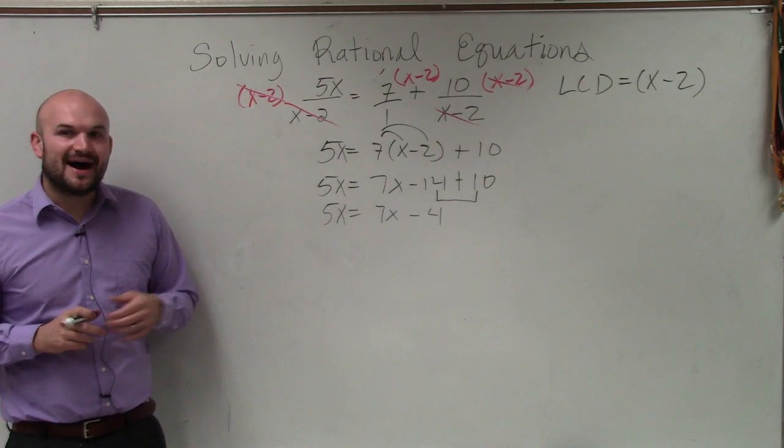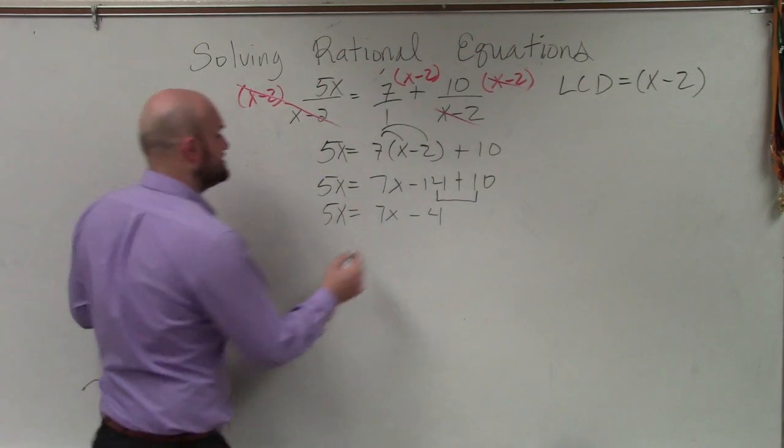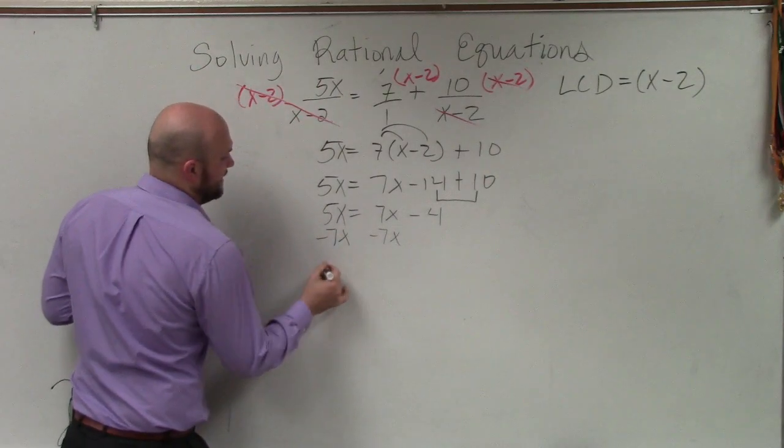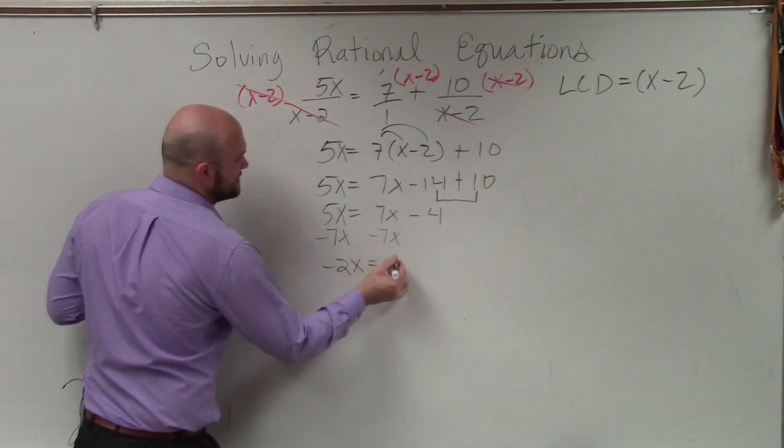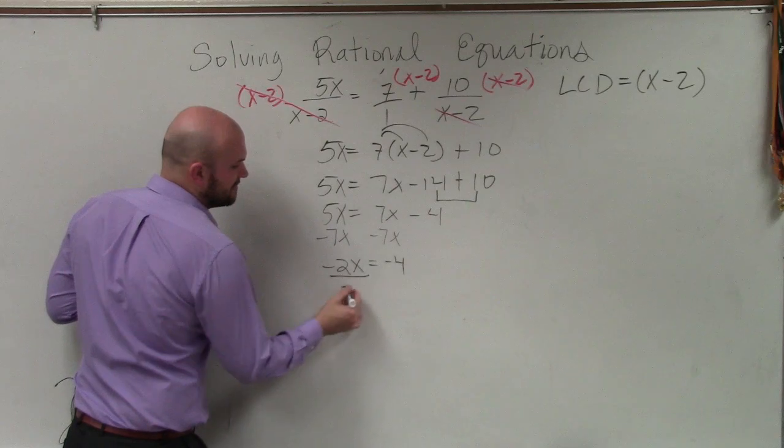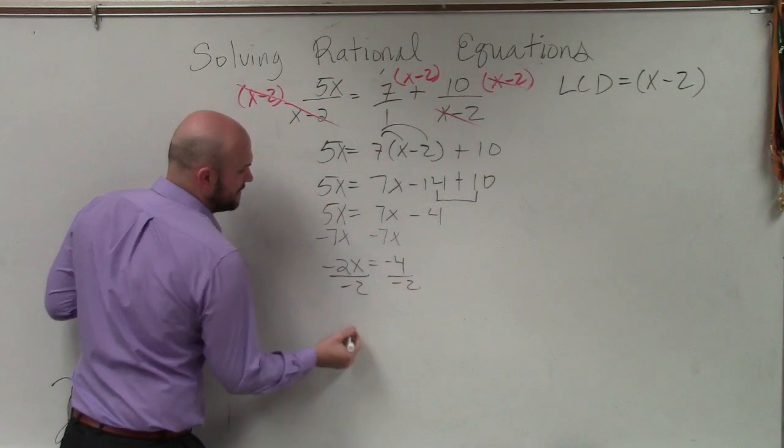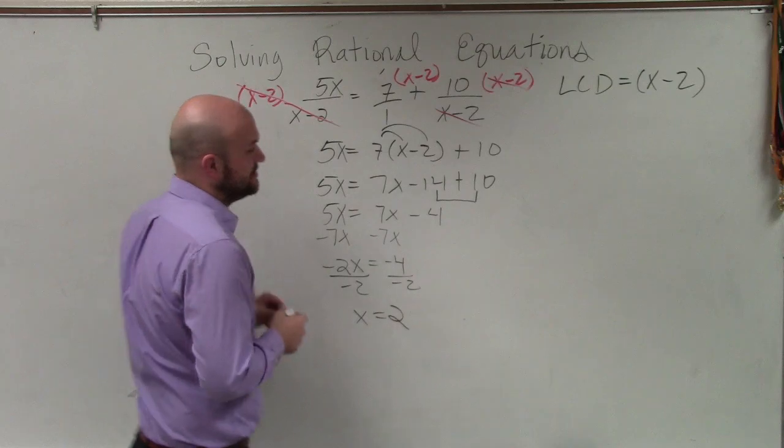So now I subtract a 7x and I get negative 2x equals negative 4. Divide by negative 2. Divide by negative 2. x equals positive 2.